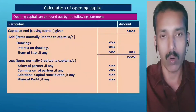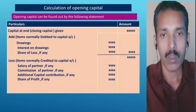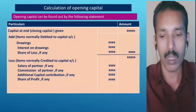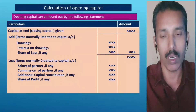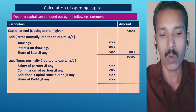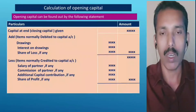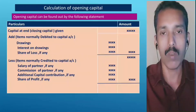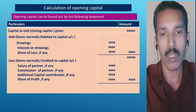Additional capital contribution and share of profit are also credit items. The opening capital account balance is a missing figure and is derived in reverse order from the closing capital.